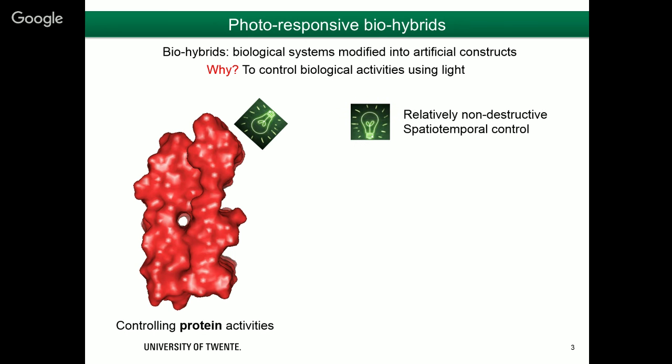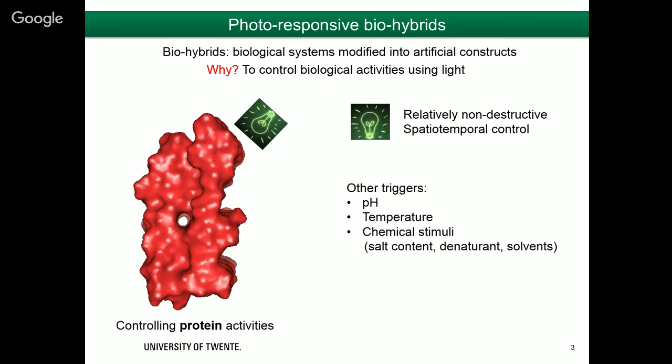Why light? First, light is relatively non-destructive towards proteins. Second, and more importantly, light enables more precise spatiotemporal control. Other triggers — pH, temperature, chemical stimuli like adding salt or a denaturant — almost guarantee structural changes to proteins and often result in global structural changes or irreversible effects. With light, we can have more selective control and control protein activities in a reversible manner.